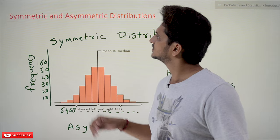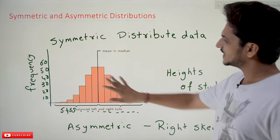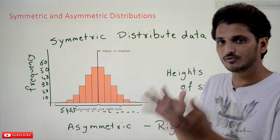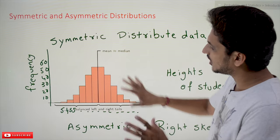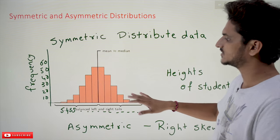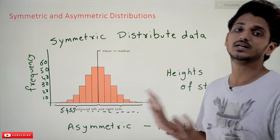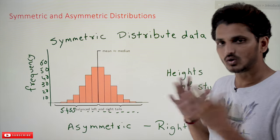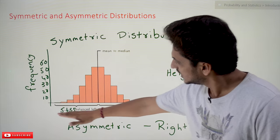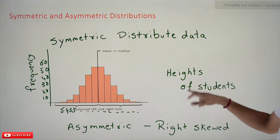Let's understand what symmetric and asymmetric distributions are. Take a distribution like this — if you collected some data and plotted it on the X-Y coordinate system, if our data looks like a bell shape, we call it a symmetric distribution. One example of symmetric distributions is the heights of students.